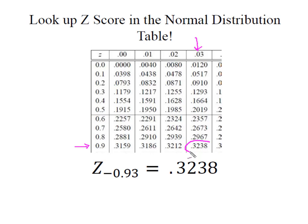The intersection of those two tells me that 0.3238, or 32.38% of the data or values in my distribution, are going to fall below 0.93 standard deviations from the mean.